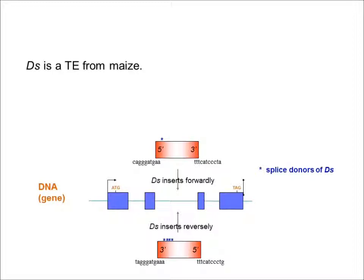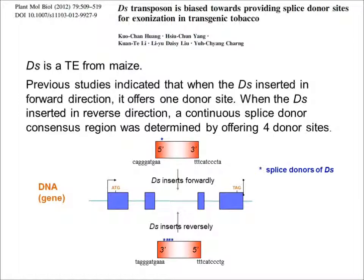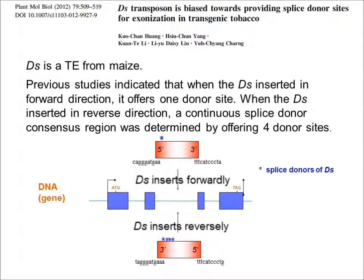dAs is a TE from maize. Previous studies indicated that when dAs is inserted in the forward direction, it offers one donor site. When dAs is inserted in the reverse direction, a continuous splice donor consensus region was determined by offering four donor sites.